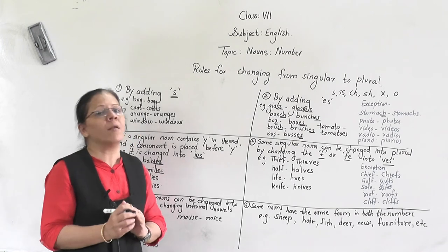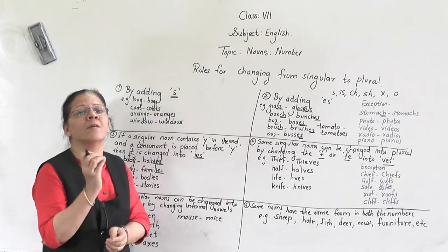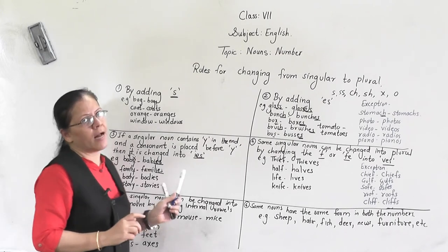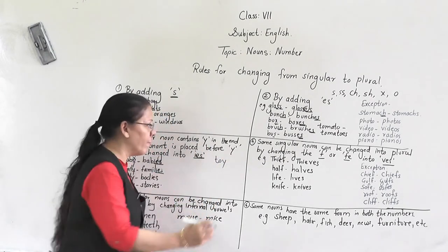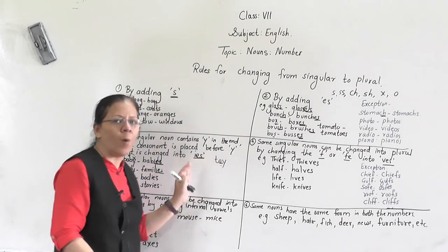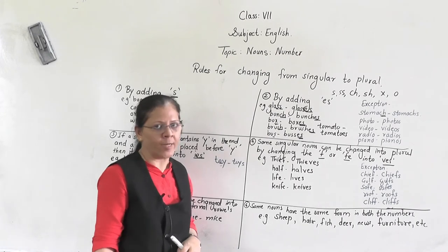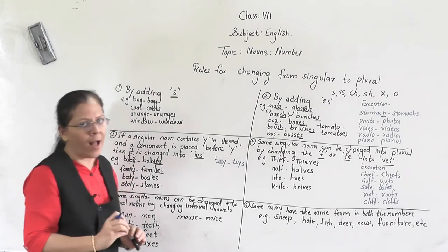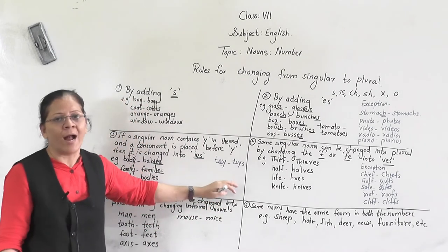Now, if the word ends in 'y' but before 'y' there is a vowel, then it will not take 'ies'. For example, 'toy' ends in 'y' but before 'y' there is 'o', which is a vowel. So we just add 's': toy becomes toys, boy becomes boys — not 'boies'. Remember: only when there is a consonant before 'y' does 'y' change to 'ies'. If there is a vowel before 'y', just add 's'.